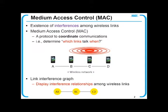It displays interference relationships among wireless links. Links in wireless networks become two vertices in the interference graph, and two vertices are connected if the corresponding wireless links interfere with each other.